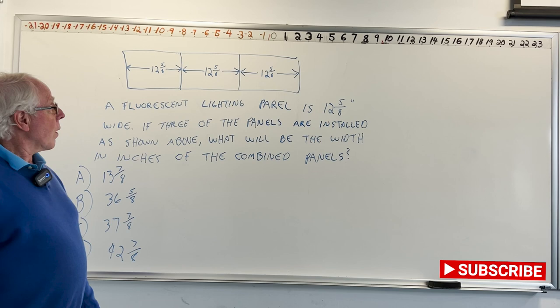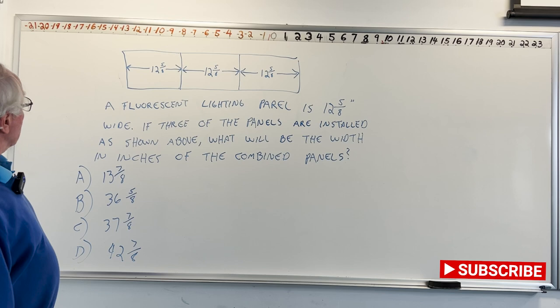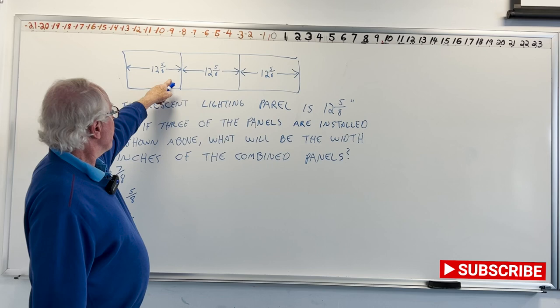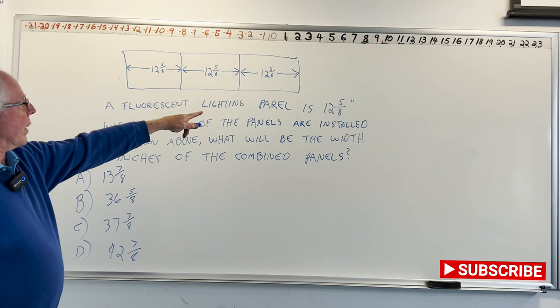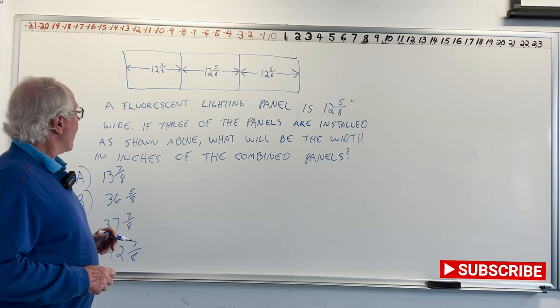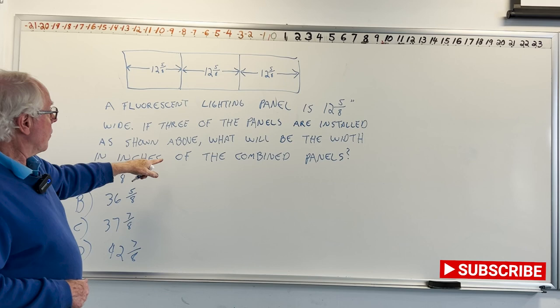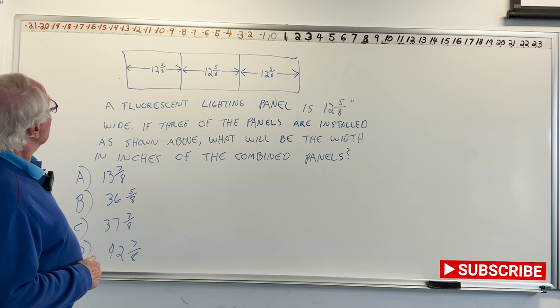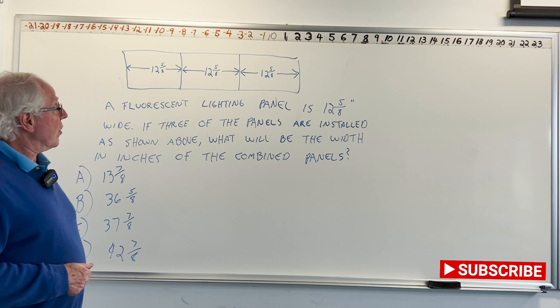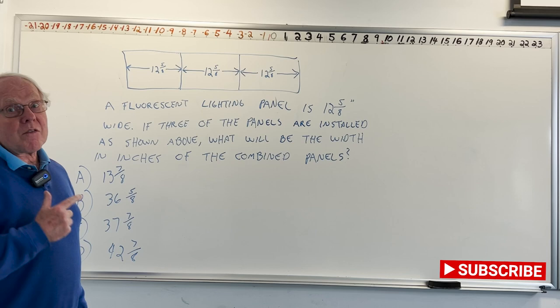Our last problem involving fractions and either multiplying or dividing is this one. So I'll give a picture here. These are supposed to be fluorescent lighting fixtures. 12⅝ is for one fixture and there's three of them. So the problem says a fluorescent lighting panel is 12⅝ wide. If three of the panels are installed, as shown above, what will be the width in inches of the combined panels? And they give four choices. So we could do this by addition. We could add 12⅝, 12⅝, 12⅝, but I think you could see that multiplication would be quicker.